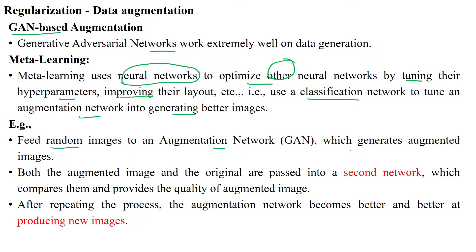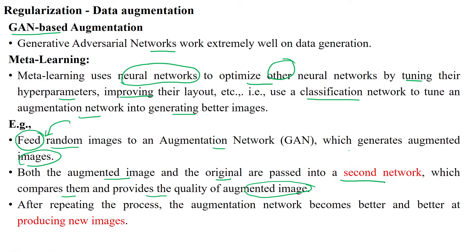For example, feeding random images into a GAN generates more images for the given input. Both the augmented image and the original are passed into a second neural network, which compares them and provides good-quality augmented images. Using this method, we can generate more images for the training dataset, increasing the number of samples and reducing overfitting. Thanks for watching.